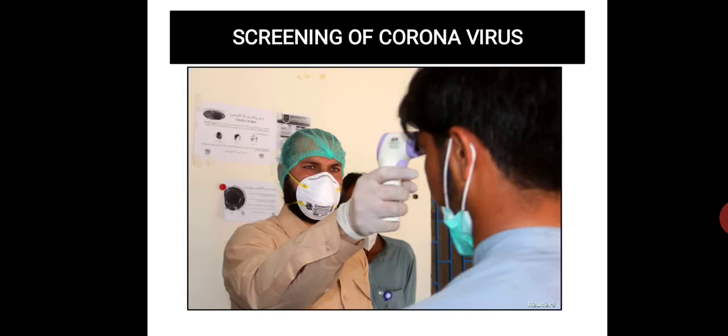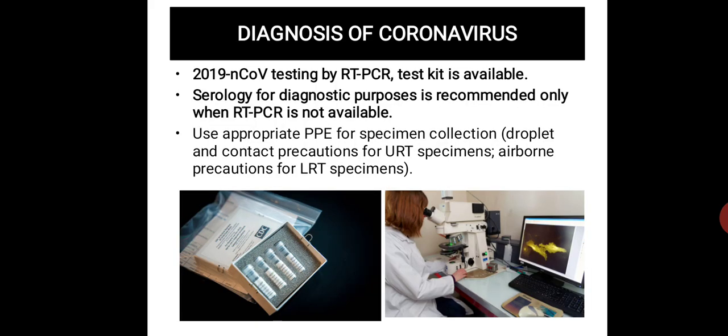Screening is simple: elevated temperature above 38°C can be detected using laser, infrared, or electronic thermometers. For diagnosis of SARS-CoV-2, the primary test is RT-PCR. Serology is recommended only when RT-PCR is not available. Appropriate PPE must be used for specimen collection — droplet and contact precautions for upper respiratory specimens, and airborne precautions for lower respiratory specimens.